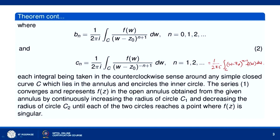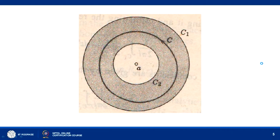Each integral in b_n and c_n is taken in the counterclockwise sense around any simple closed curve C which lies in the annulus and encircles the inner circle. As shown in the figure, there are two concentric circles C1 and C2 with centre at z0, and the shaded annular region between C1 and C2 is where the function is analytic. C is any simple closed curve lying in the annulus that encircles the inner circle.